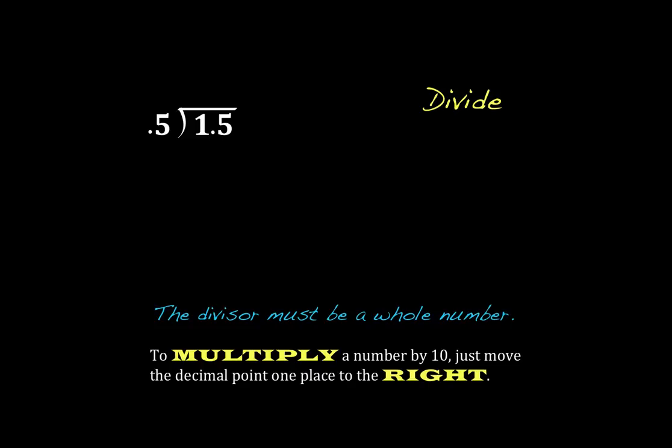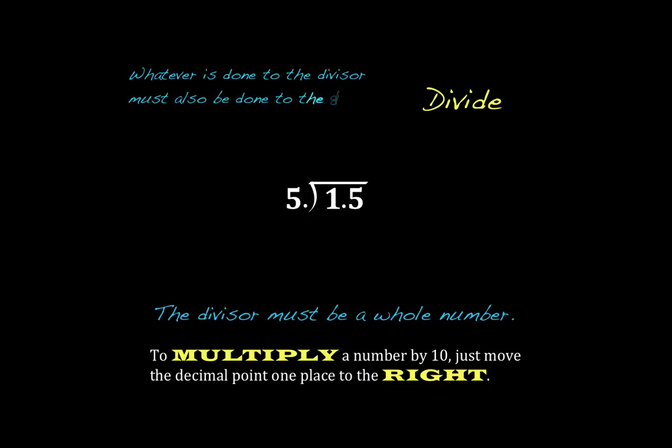So here's our problem. We have 1.5, or 1 and 5 tenths, divided by 5 tenths. Now we know that we can't have a decimal in the divisor, so we're going to have to change that. And the way we're going to change it is by moving that decimal place over to the right. So I'm going to take that decimal point right here and we're going to move this over one spot. And we're going to do the same thing, of course, to the dividend.